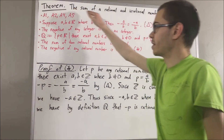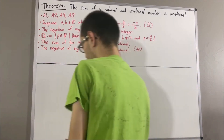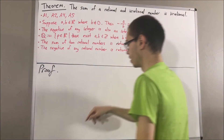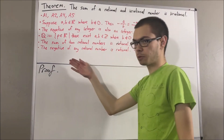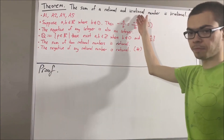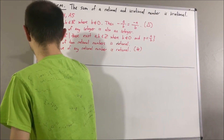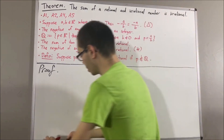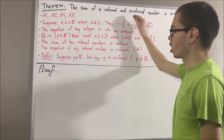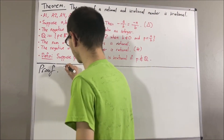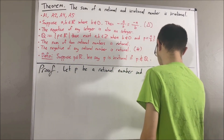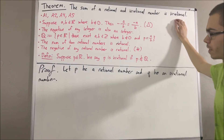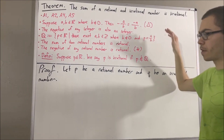Now let's get into proving the main theorem. Before we do, maybe I should state what it means for a number to be irrational. Our definition is: given any real number p, we say that p is irrational if p is not a rational number. To start the proof, let's give ourselves an arbitrary rational number p and an arbitrary irrational number q. From here, the whole goal is to show that p plus q is irrational. To show that, assume for a contradiction that we instead have that p plus q is rational.